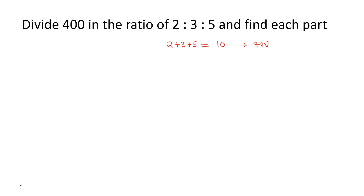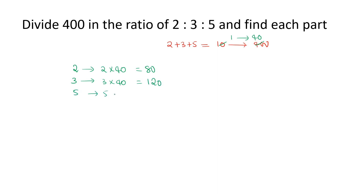So 10 becomes 400. That means the unit of one value is 40 — the value we assumed is multiplied 40 times to get the original value. Now we can see each part: the first part is 2, so 40 times 2 equals 80. The second part is 3, so 40 times 3 equals 120. The third part is 5, so 5 times 40 equals 200. Each part after distributing 400 is: 80, 120, and 200.